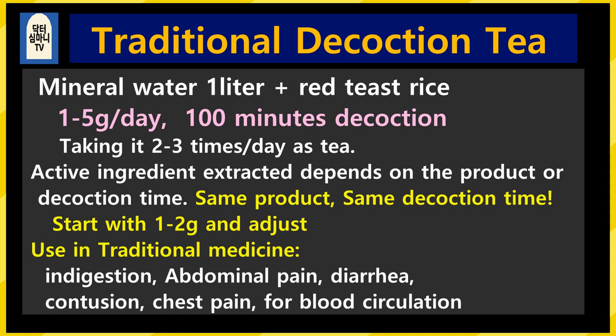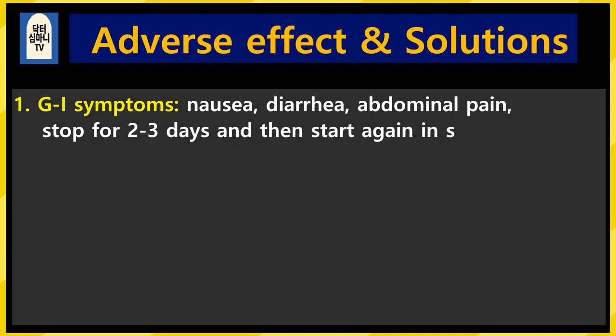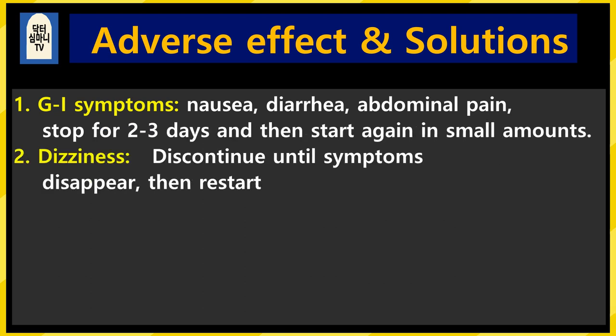Start with 1 to 2 grams and adjust as you monitor changes. In traditional medicine, there are records of its use for digestive disorders, abdominal pain, diarrhea, chest pain, bruising, and for blood circulation. Now let's look at the side effects and how to deal with them.